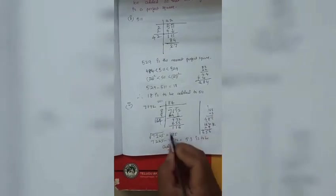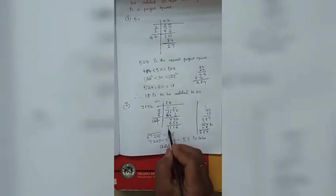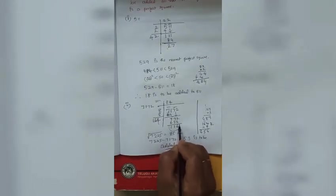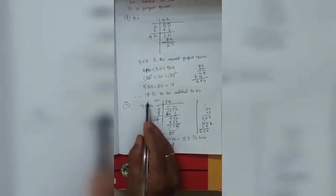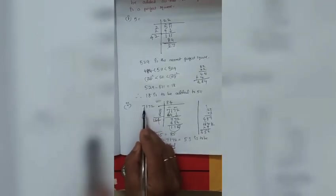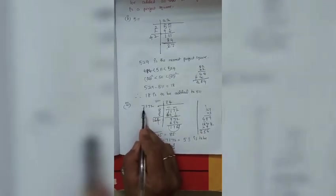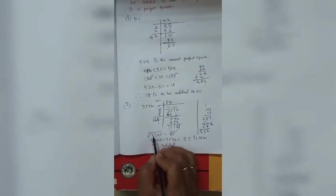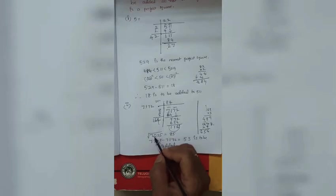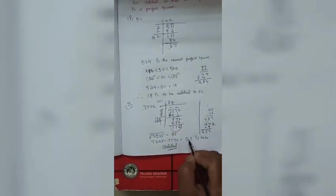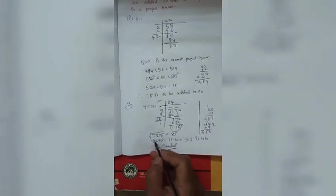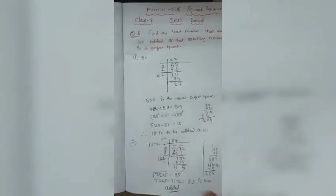Children, note that the remainder found is not the required number to be added. You must find the nearest perfect square above the given number, then subtract the given number from that perfect square. The difference is what you add. Try the third one on your own.